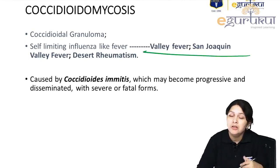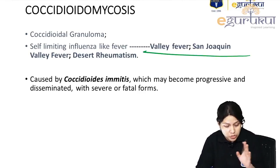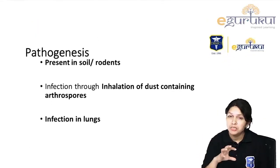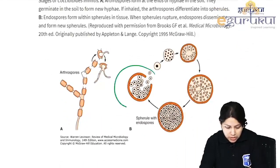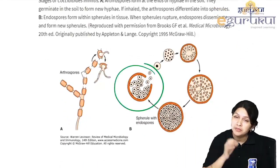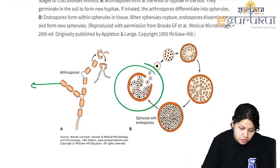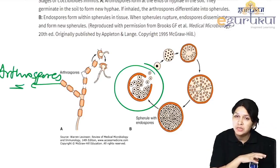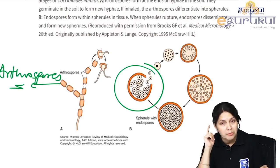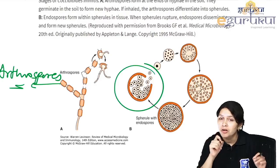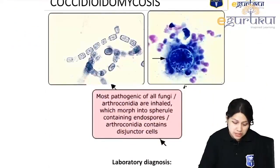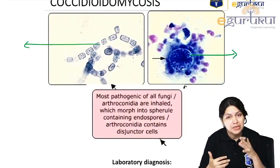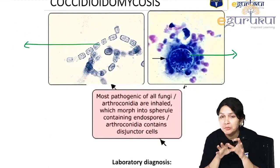Coccidioides immitis is the agent for valley fever, desert rheumatism, or San Joaquin valley fever. We see endospores in spherules. In culture, classical arthrospores are seen. So, in coccidioides: arthrospores in culture; in Histoplasma: tuberculate macroconidia in culture — both are important clues for fungal identification. From the specimen, spherules filled with multiple endospores are seen.